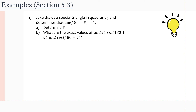It says Jake draws a special triangle in quadrant three and determines that tan of (180 + θ), which is going to be our principal angle, equals one. Before we start the question, let's just draw our scenario.